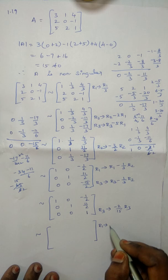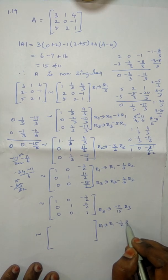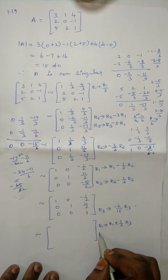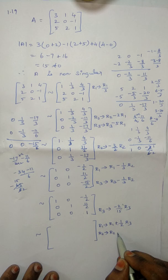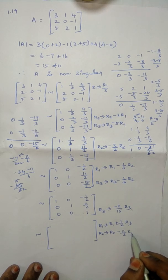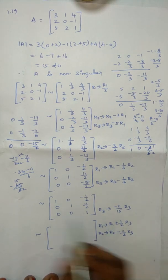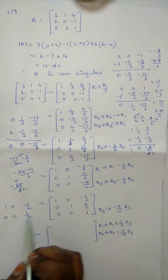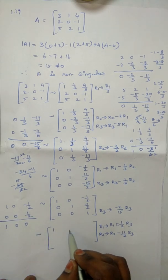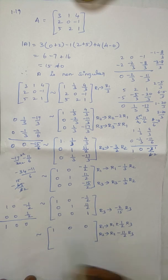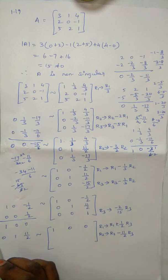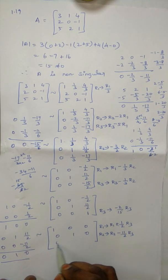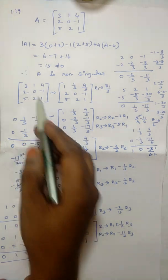Now R1 implies R1 minus (minus 1/2) R3, which is R1 plus 1/2 R3. R1: 1, 0, minus 1/2; plus 1/2 times [0,0,1] gives 0, 0, 1/2. Result: [1, 0, 0]. R2 implies R2 minus 11/2 R3. R2 is [0,1,11/2]; minus 11/2 times [0,0,1] gives 0, 0, minus 11/2. Result: [0, 1, 0]. R3 remains [0, 0, 1]. It has become the identity matrix.